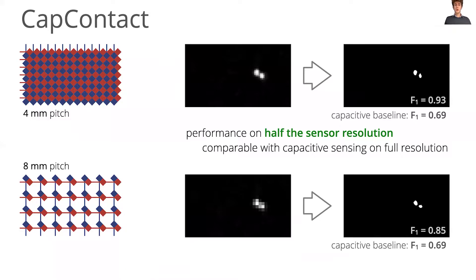Because we're working with super-resolution, we also conducted experiments on images at just half the input resolution, so twice the pitch. And still, CapContact produced contact areas that separated touches with an F1 score that was much higher than the baseline achieved in full-resolution images.